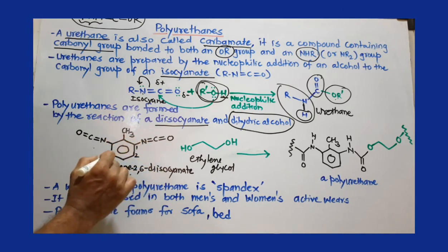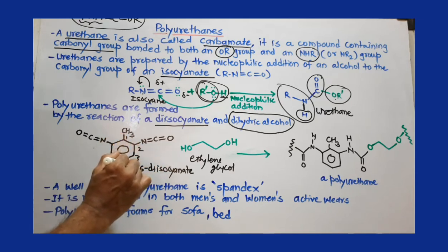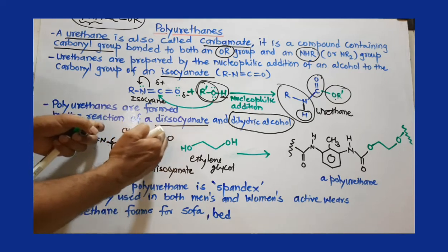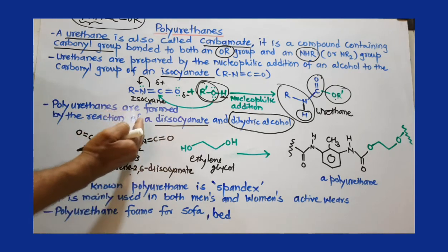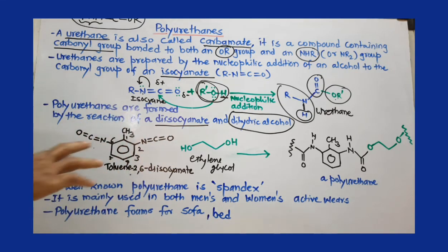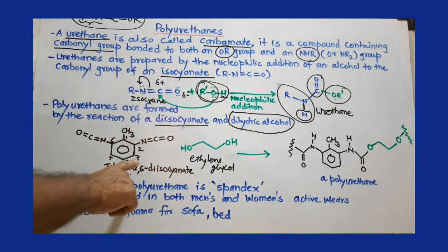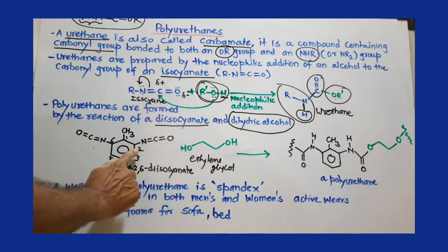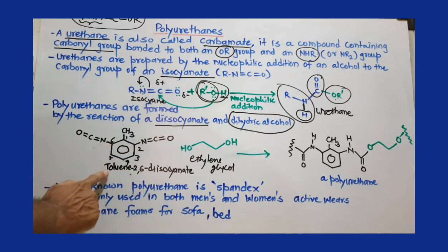This is 1, 2, 3, 4, 5, and 6. If you remove this portion, this is toluene. The middle portion is toluene, or it is a substituted toluene or toluene derivative where these isocyanate groups are attached at the 2nd and 6th positions. This is called toluene 2,6-diisocyanate.